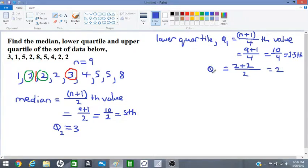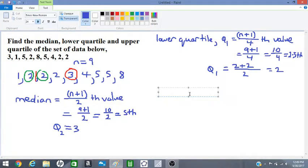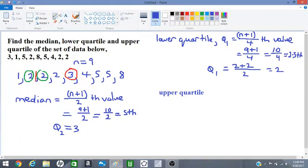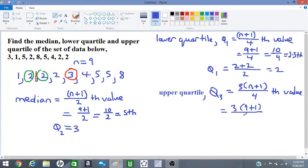This is our value for the lower quartile, Q₁ = 2. Let's work on the upper quartile now, also known as Q₃. It will be the 3(n+1)/4 value. With n being 9, we have 3(9+1)/4 = 3(10)/4 = 30/4.